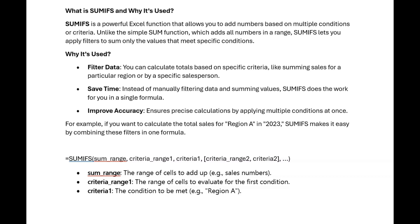For example, if you want to calculate the total sales for Region A in 2023, and your region variable has Region A, B, and C, while your year variable has 2023, 2022, and 2024, SUMIFS makes it easy by combining these filters in one formula, applying only Region A and 2023.